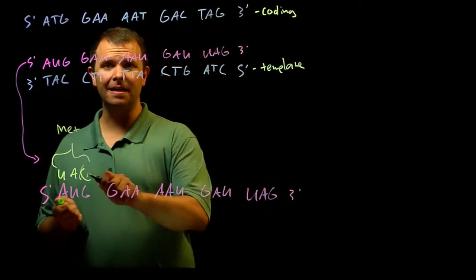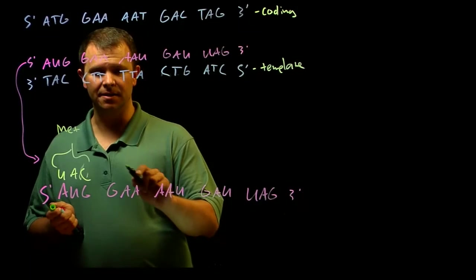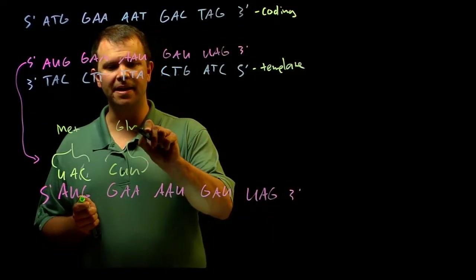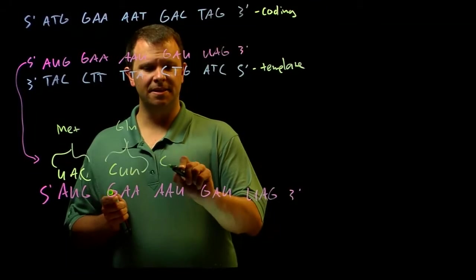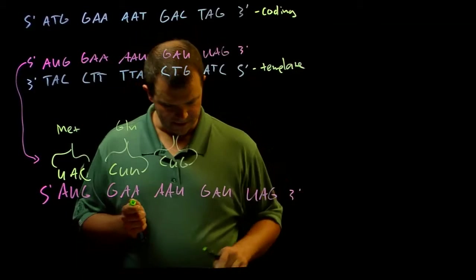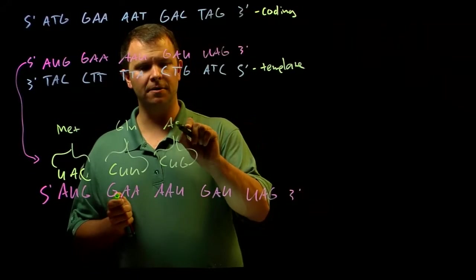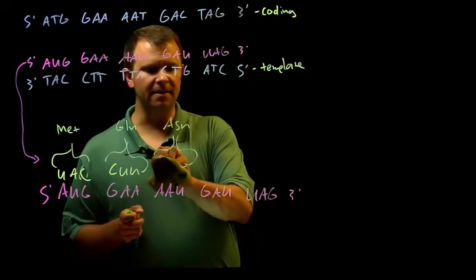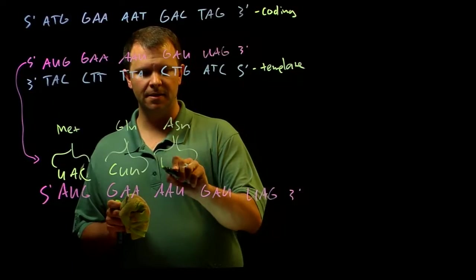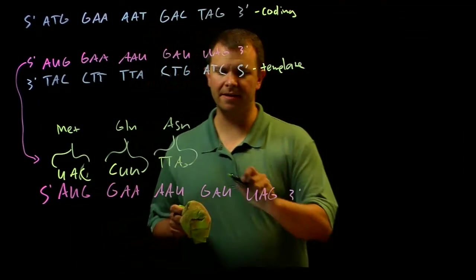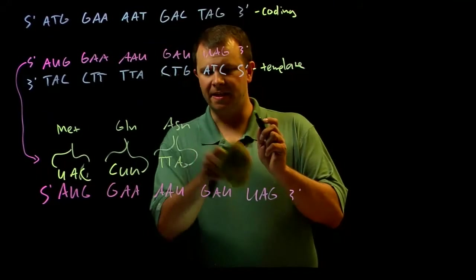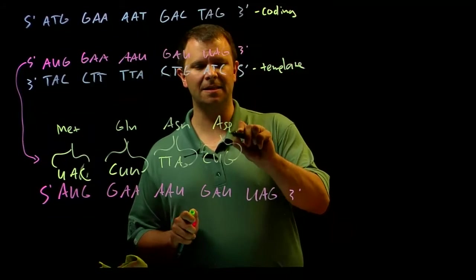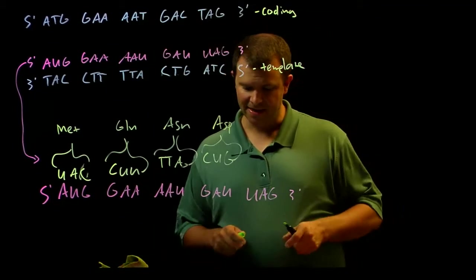And so this one is a methionine, and so this anticodon is C-U-U, and its amino acid is a glutamate. This one is C-U-G, and its amino acid is an asparagine. I mean, I got that wrong, sorry about that. It's not C-U-G, it is T-T-A. That's right. This one is C-U-G, and the amino acid this codes for is an aspartic acid, and the U-A-G is a stop codon.